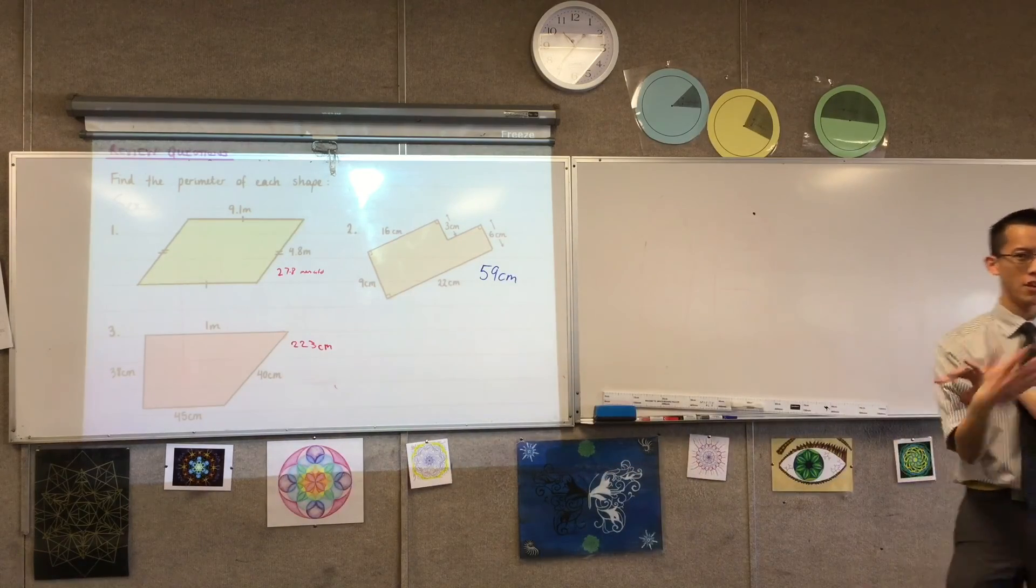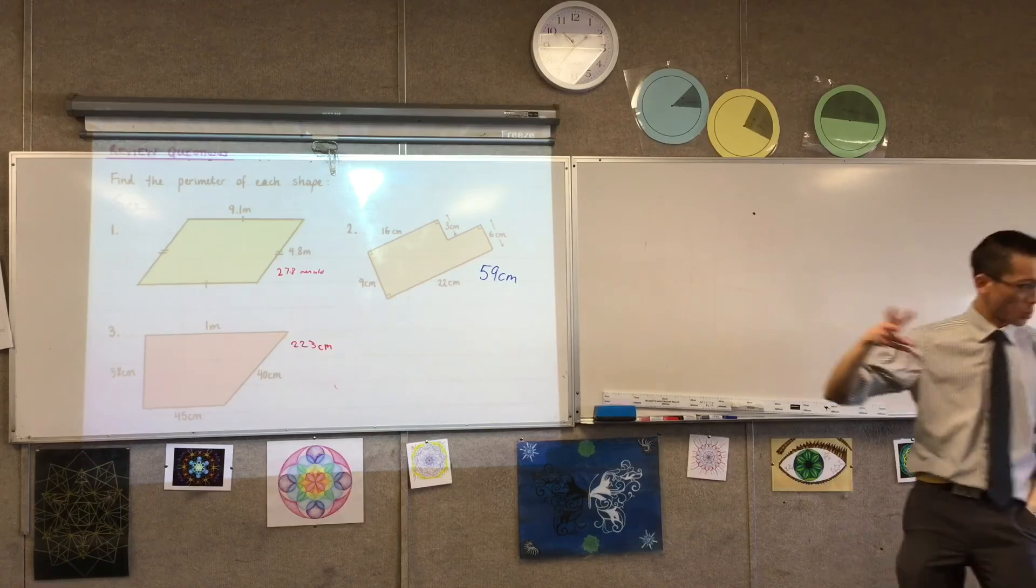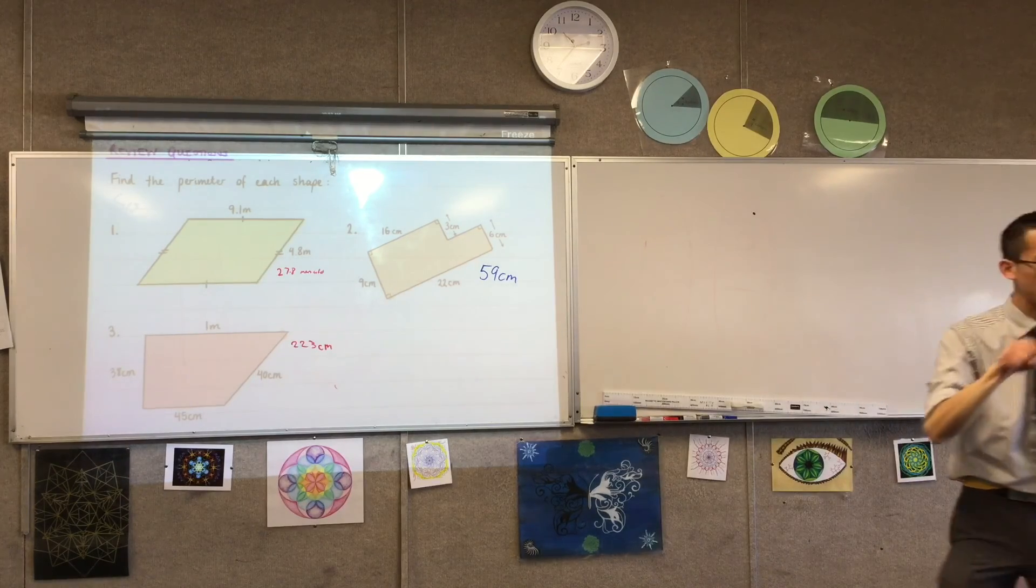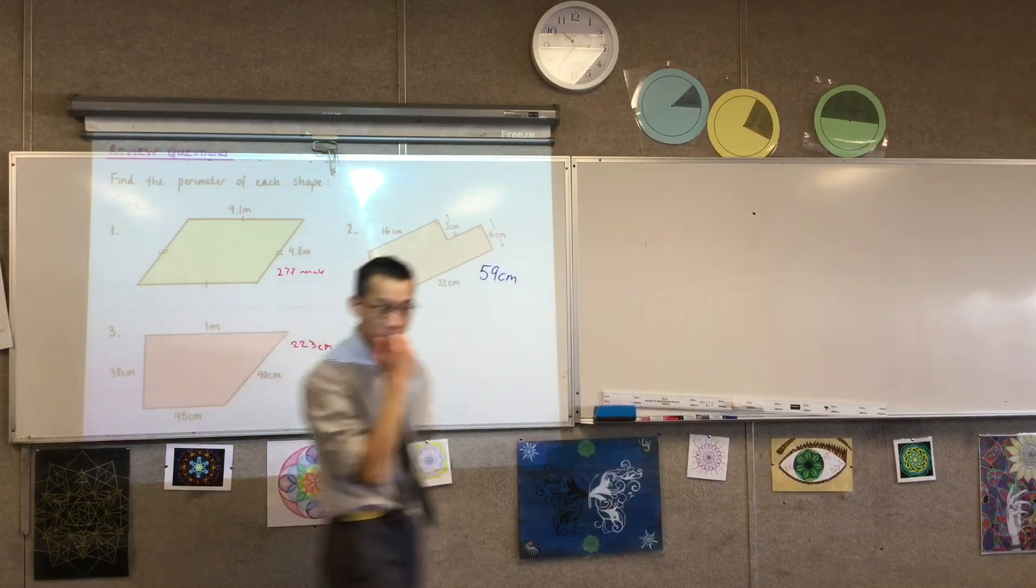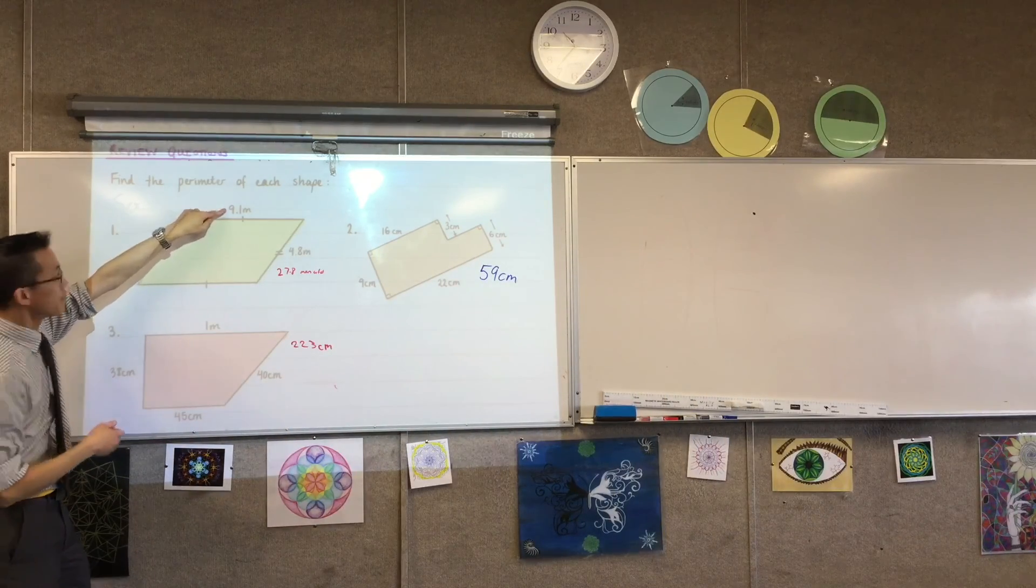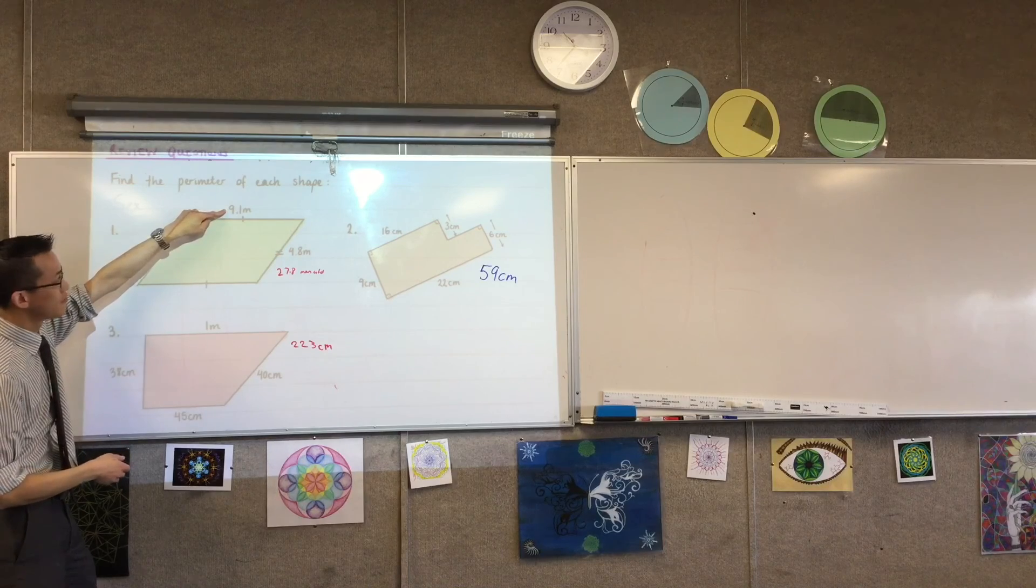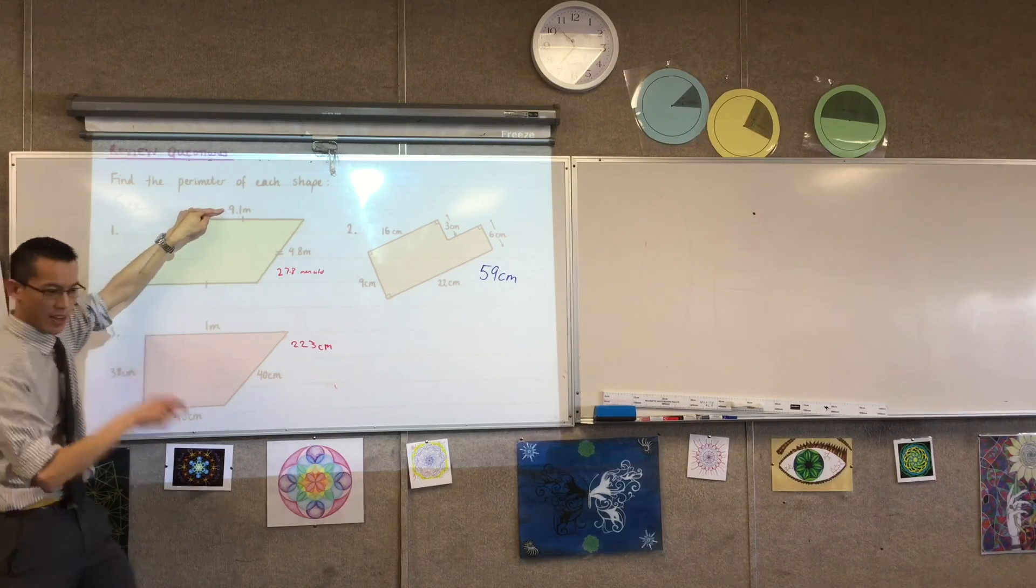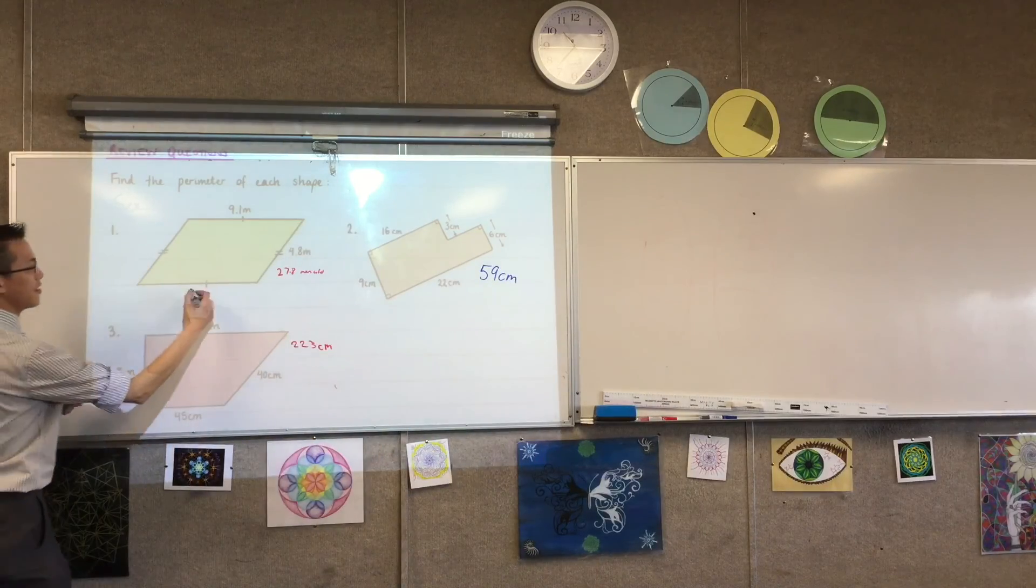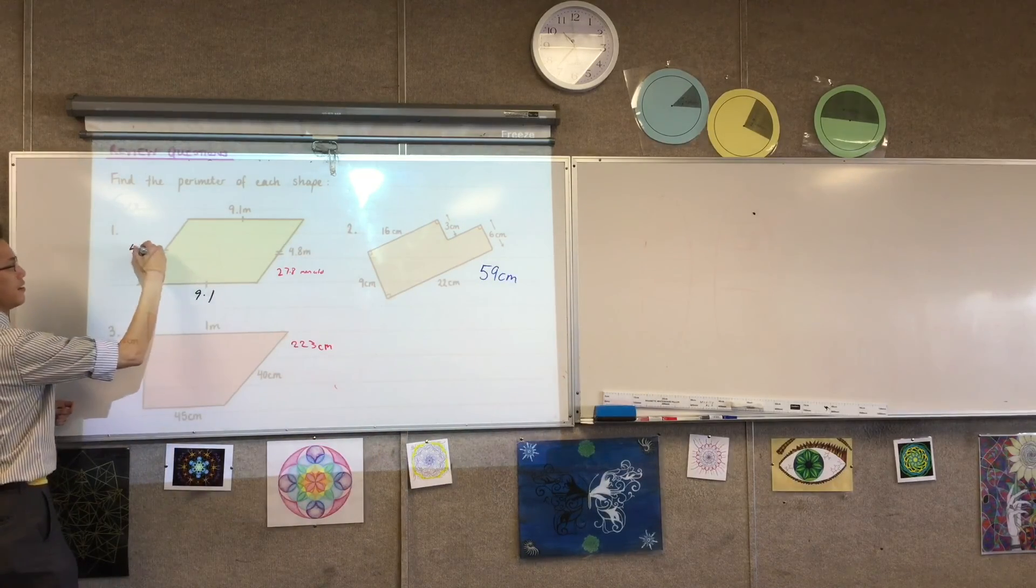Just before we move past it though, because not everyone gave me a thumbs up. 27.8, where does that come from? Because I haven't actually written all four sides on there. I did 9.1, times that by 2, and that got me 18.2, and then I did the same with 4.8, which is 9.6, and then I added those together. Okay, lovely.